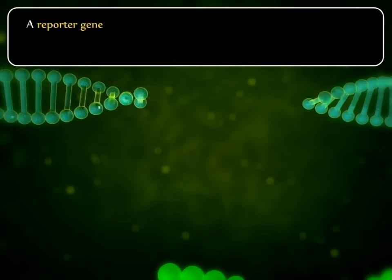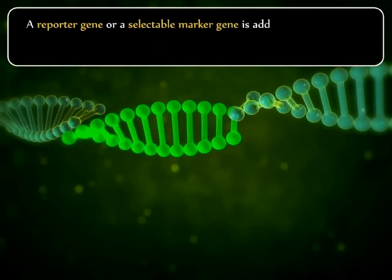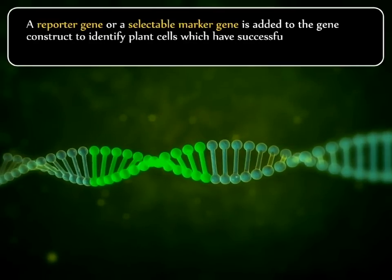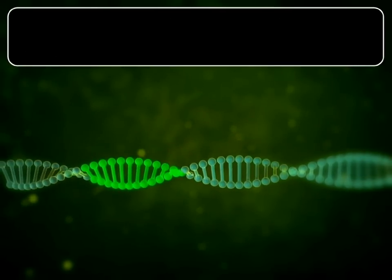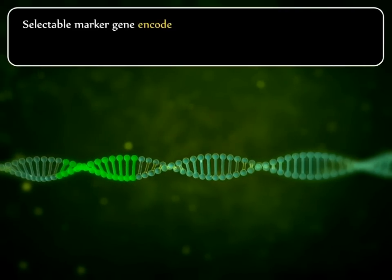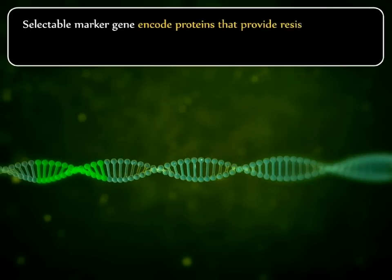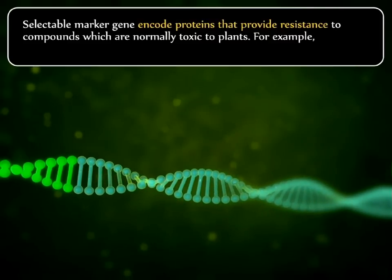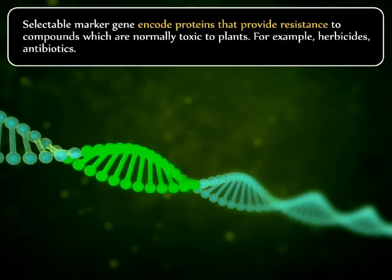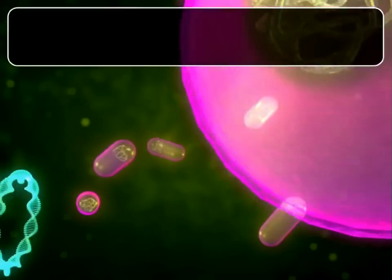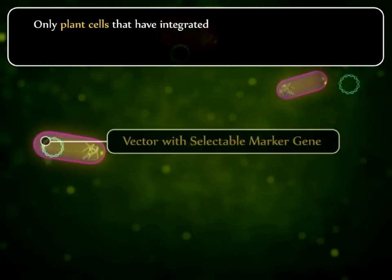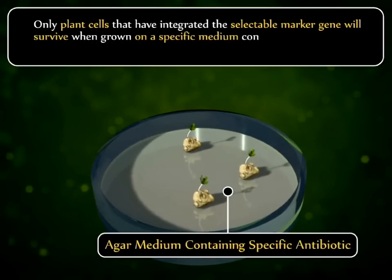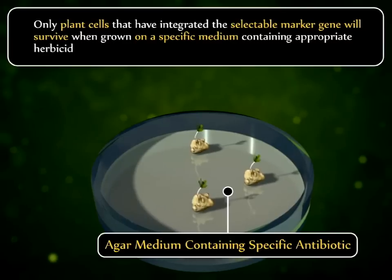A reporter gene or a selectable marker gene is added to the gene construct to identify plant cells which have successfully integrated the transgene. Selectable marker genes encode proteins that provide resistance to compounds which are normally toxic to plants, such as herbicides or antibiotics. Only plant cells that have integrated the selectable marker gene will survive when grown on a specific medium containing the appropriate herbicide or antibiotic.